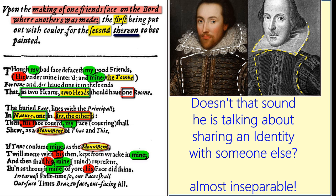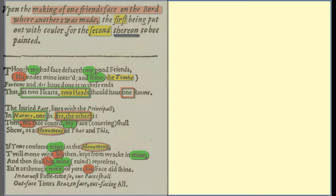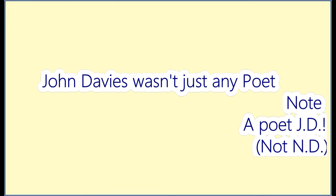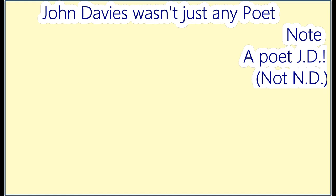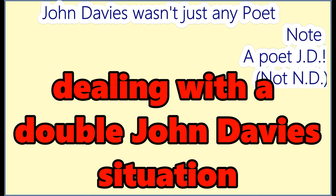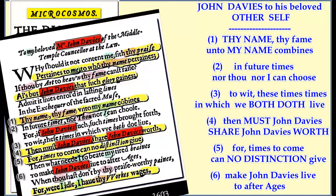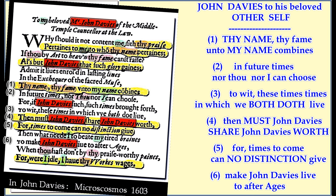The video throws in another twist — it explores the possibility that this John Davis wasn't just any poet. He might have actually been the attorney general of Ireland at the time, and this attorney general also happened to be connected to William Herbert. So we might be dealing with a double John Davis situation: a poet and a high-ranking official, both linked to Shakespeare through William Herbert. The video argues the shared name wasn't just a coincidence — there's a poem where Davis explicitly states, 'all's but one John Davis, then must John Davis share John Davis worth' — directly acknowledging the idea of a shared identity.